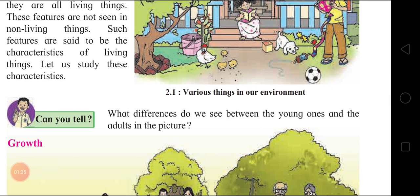Characteristics of living things: 1st is Growth, 2nd Respiration, 3rd Excretion, 4th Reproduction, 5th Responsiveness to Stimuli, 6th Movement, 7th Definite Lifespan, 8th Cellular Structure. These are the characteristics of living things.